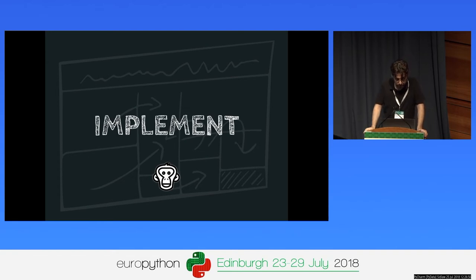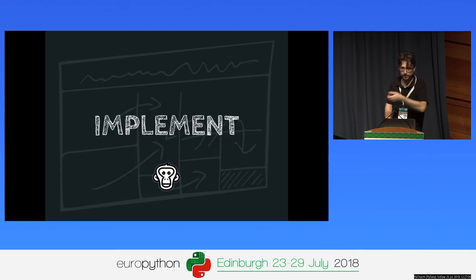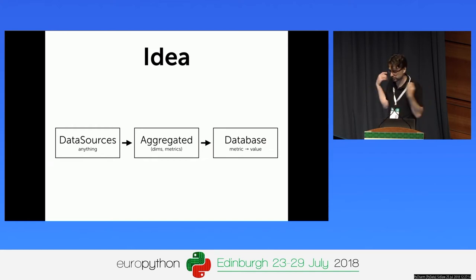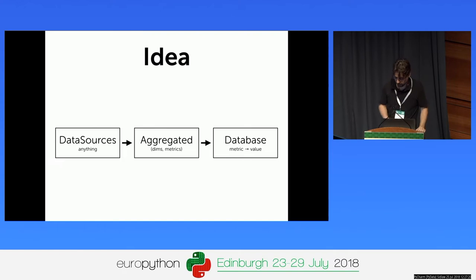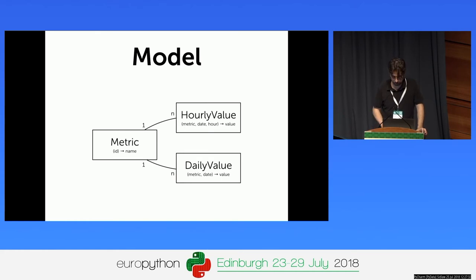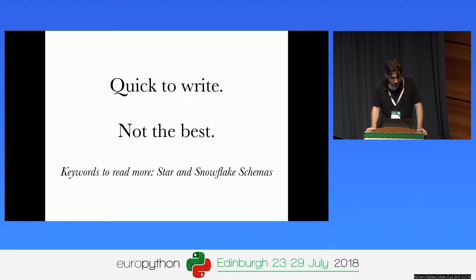The first of the three technical steps is using Bonobo to implement data pipelines — integrating data into a metrics database. Very simply: we get some data, aggregate it, normalize it, and put it into a metric-value database, most probably timestamped. I thought about the simplest model for that: it's a metrics table, hourly values, and daily values. Quick to write, probably not the best, but it works for this stage.